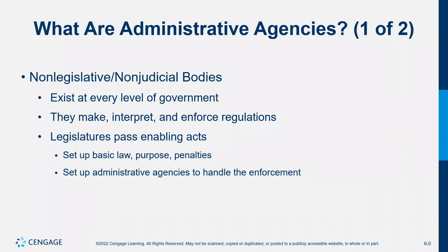Sometimes these agencies do things that make people think they're acting outside the legislative process — creating rules that impact us like laws and adjudicating those rules. If the Department of Agriculture says you can't sell unpasteurized milk and fines you, and you want to challenge it, you can't just go straight to regular court. You first challenge it in their own administrative court, with an administrative judge who works for their department, and only then can you appeal to the federal appeals court or the Supreme Court.